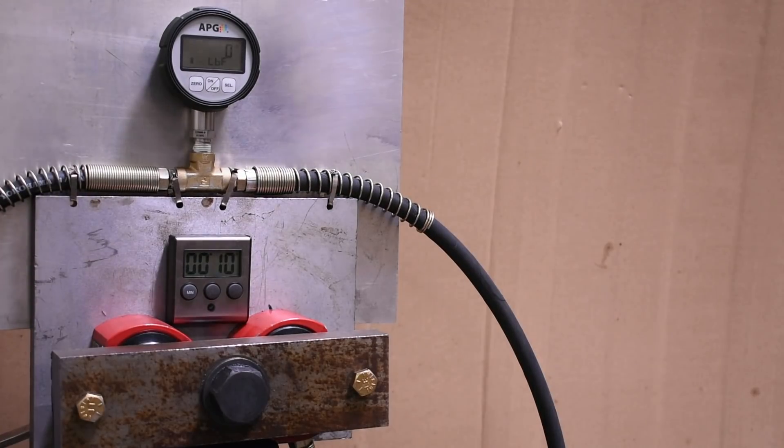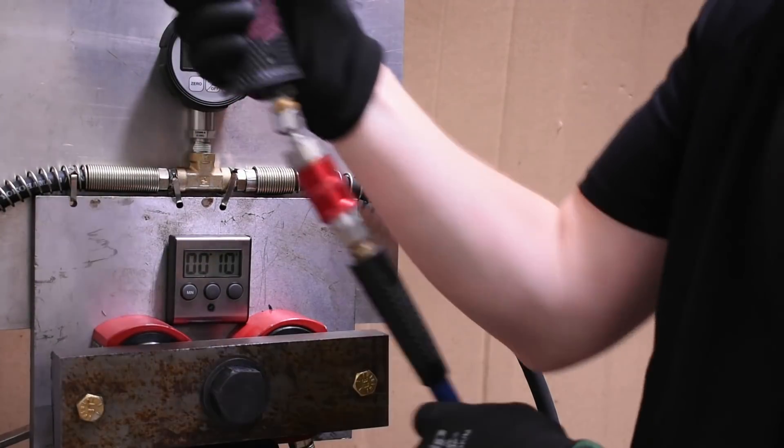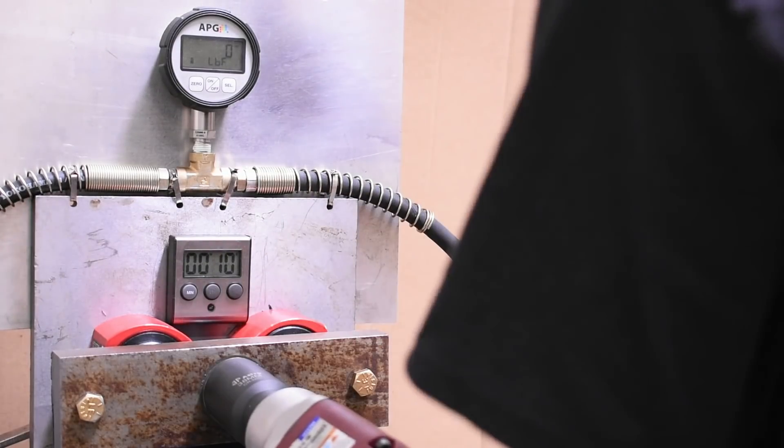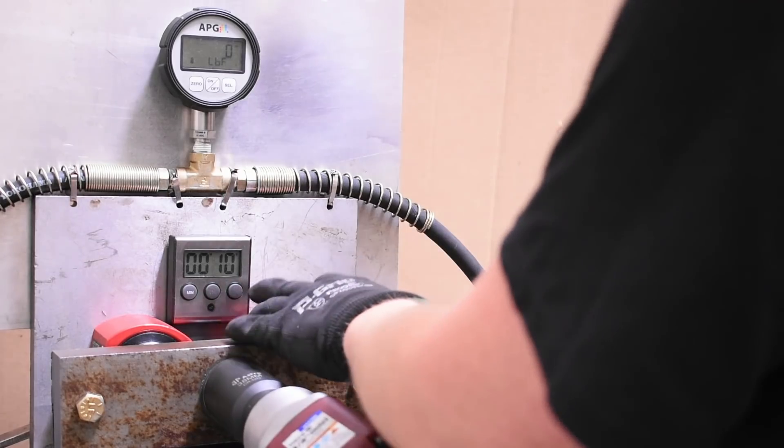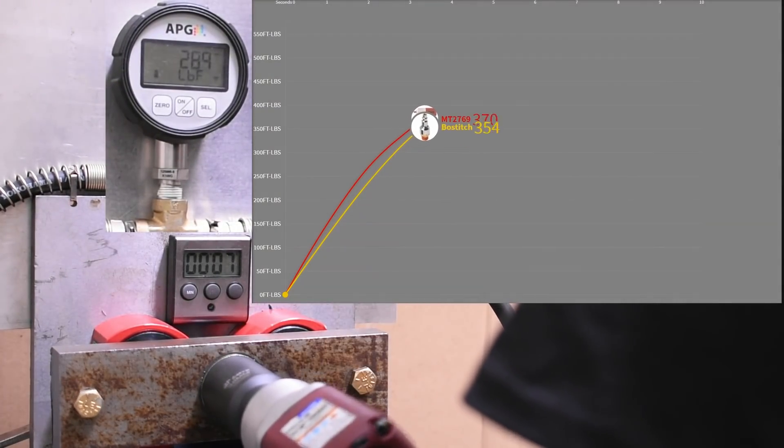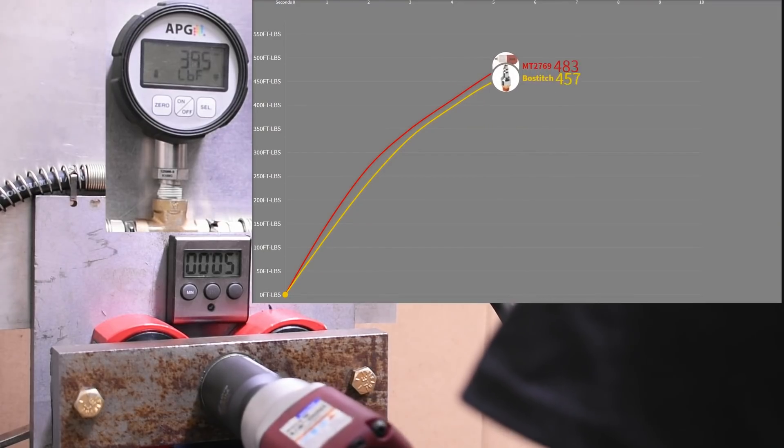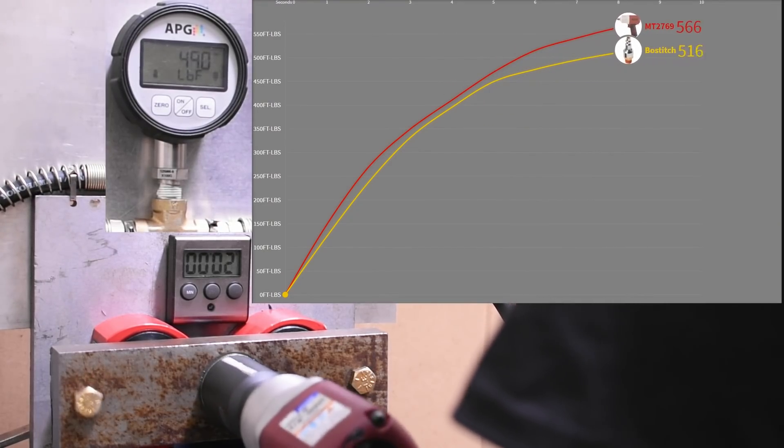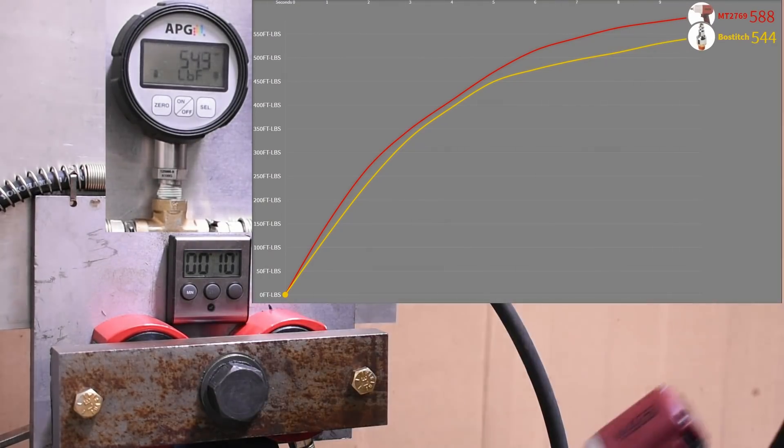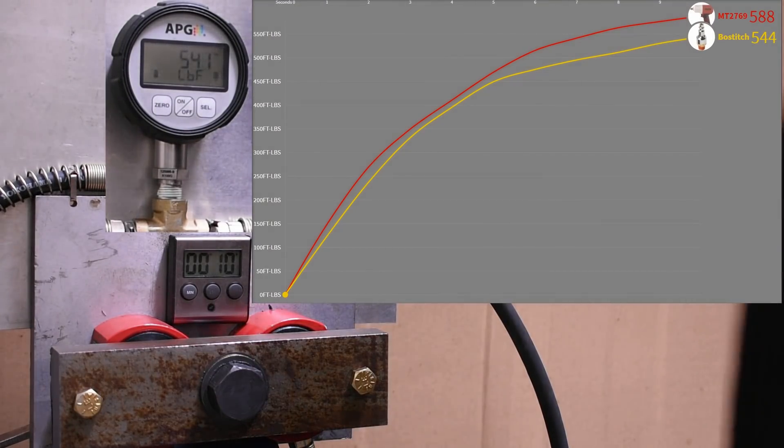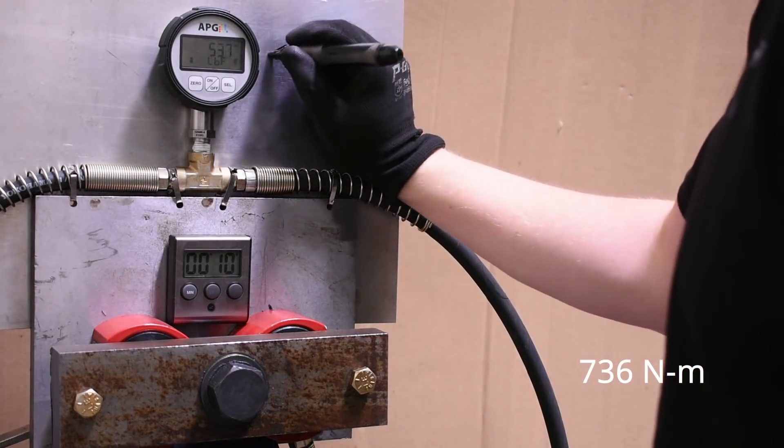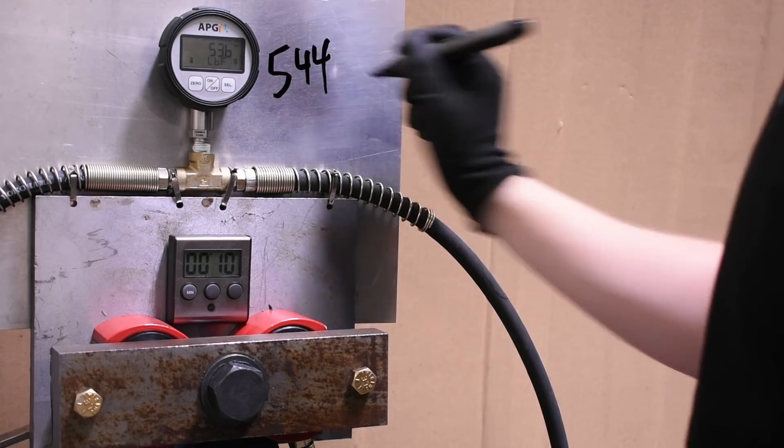Our first air swivel up today is the Bostitch, pretty much the most common air swivel you'll find in someone's garage at home. Here's this 10 second max run versus the baseline 588. So 544, that's about a seven to eight percent loss. Seeing some gap when the bolt is not super tight, but when things get tough seeing that gap widen a lot.